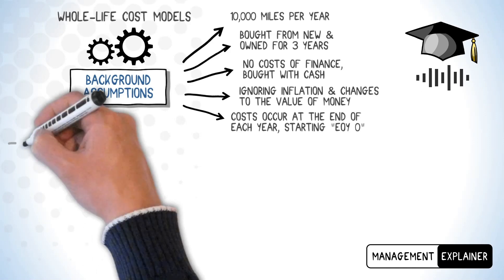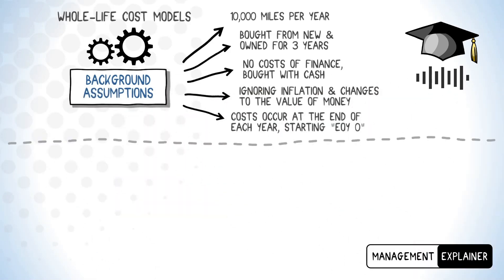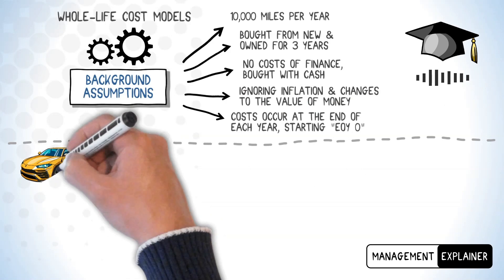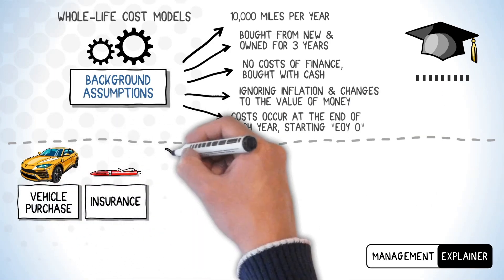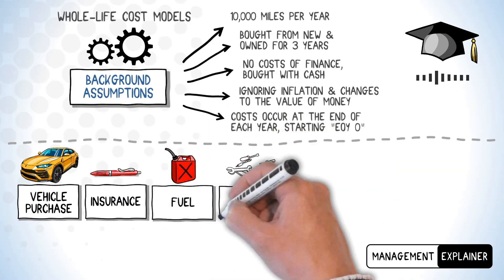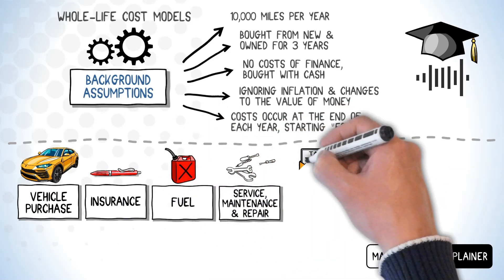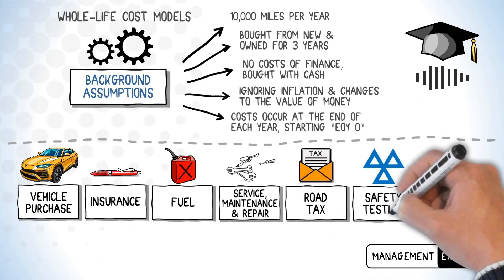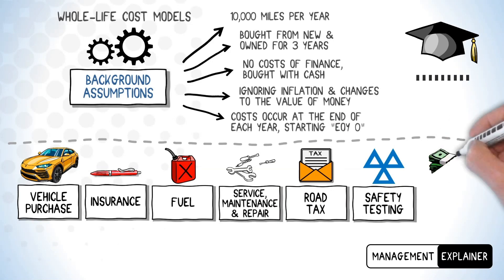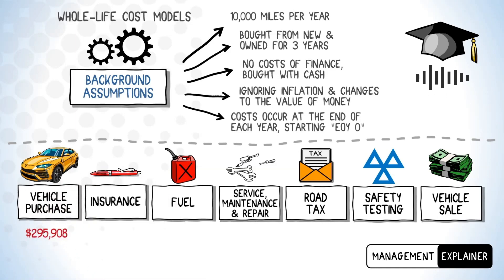Now let's build our cost model. We've got the cost of vehicle purchase at the start of the ownership period, then we have the insurance cost, fuel cost, service maintenance and repair costs, road tax, and the cost of vehicle safety testing, which is called MOT in the UK. At the end of the ownership period we receive back the remaining value of the car when it's sold. We're assuming the Urus is bought new for $295,908.